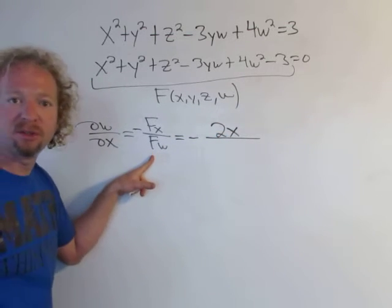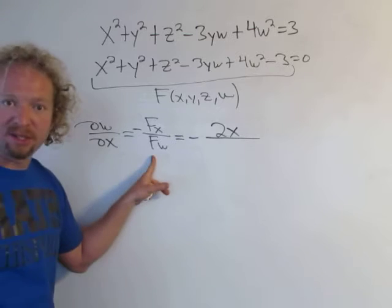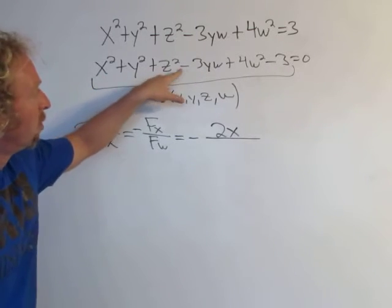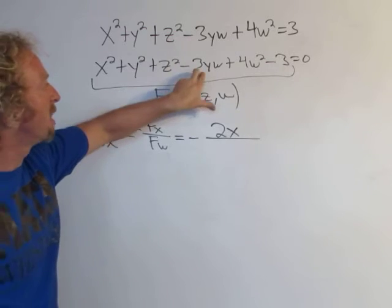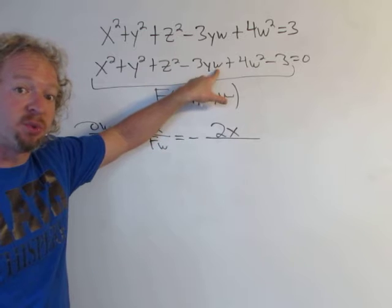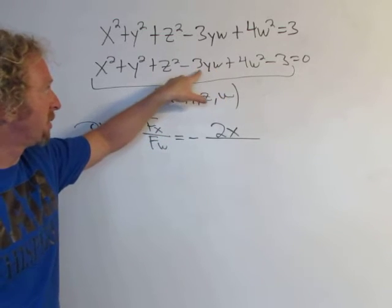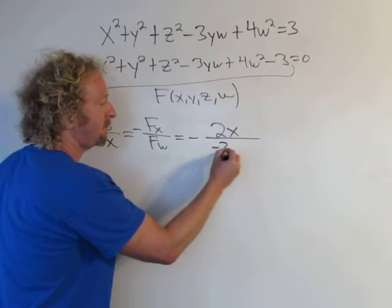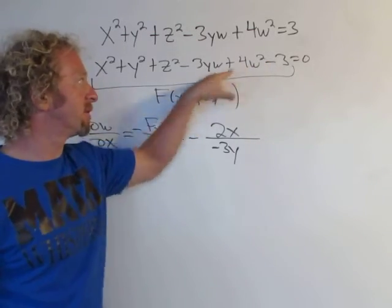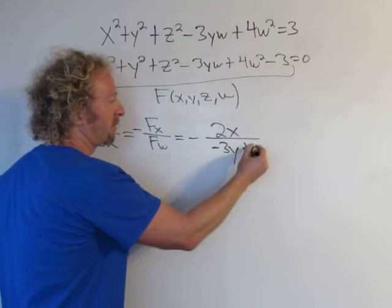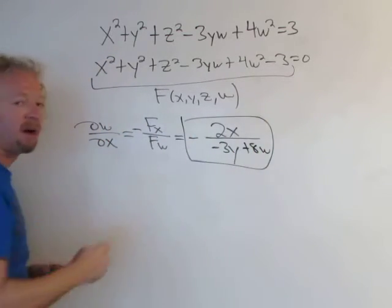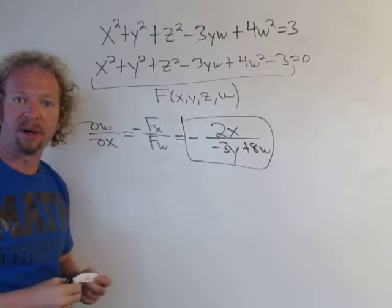For the partial with respect to w, x, y, and z are all constant, so x squared, y squared, and z squared will be zero. W is not constant — we have a number times w, so we take the derivative. The derivative of w is 1, so we just get negative 3y. Then the derivative of 4w squared using the power rule: 2 times 4 is 8, so we get plus 8w. And that's the partial of w with respect to x: negative 2x over negative 3y plus 8w.